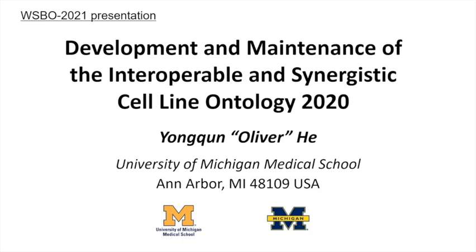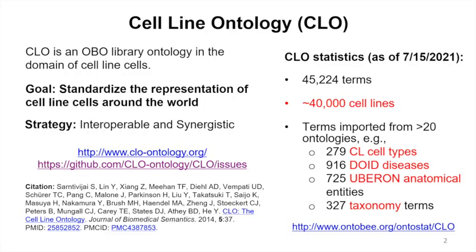I'm going to talk about the Cell Line Ontology and how we can improve it. The Cell Line Ontology is an OBO library ontology in the domain of cell line cells. Originally, many parties joined together — before, different groups were working individually. We joined forces and published a paper in 2014, and we still have a lot of activities going on, which is what I'll talk about today.